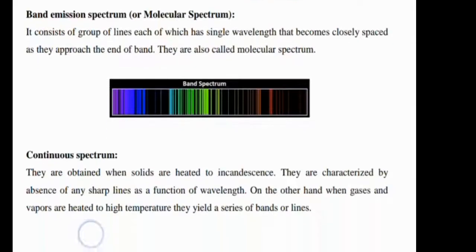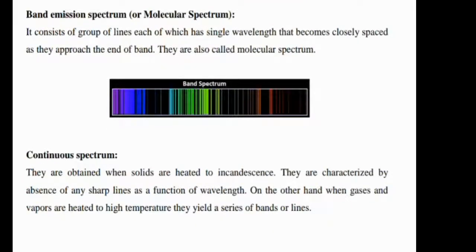Further, we have band emission spectrum, or it is also called the molecular spectrum. It consists of a group of lines, each of which is a single wavelength that becomes closely spaced as they approach the end of the band. You can see clearly a picture of the band emission spectrum.